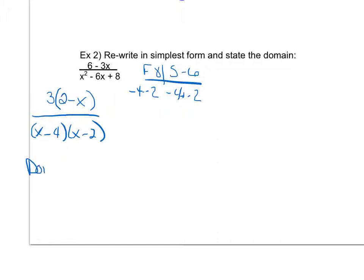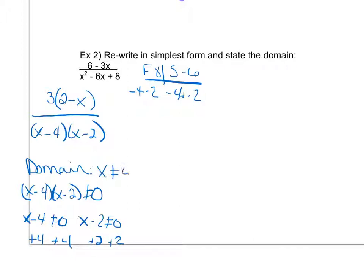Now I'm going to take care of my domain. So I cannot let the bottom be 0. So that tells me that x minus 4 times x minus 2 cannot be 0. So according to the zero product property that tells me that either x minus 4 cannot be 0 or x minus 2 cannot be 0. Solving each of those I end up with a domain of all x values except x cannot be 4 and x cannot be 2.